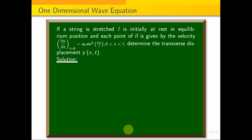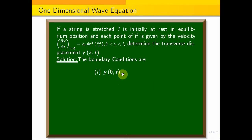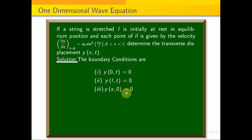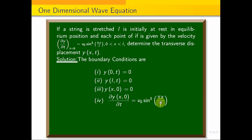The boundary conditions are: the endpoints are fixed, so y(0,t) = 0 and y(L,t) = 0. The initial displacement gives y(x,0) = 0. The initial velocity gives ∂y/∂t at t=0 equal to v₀ sin³(πx/L).